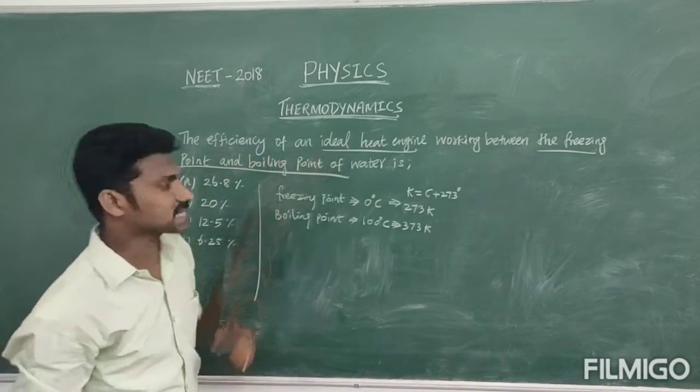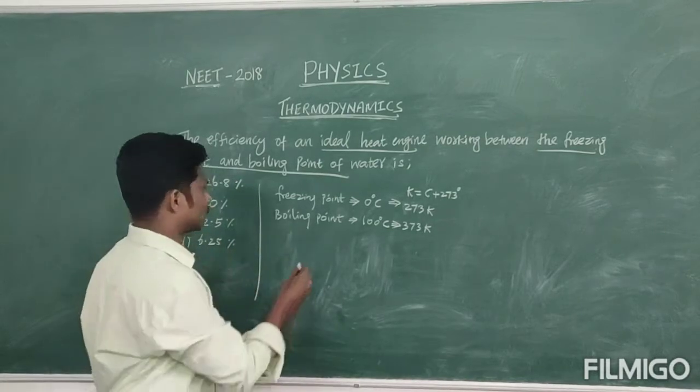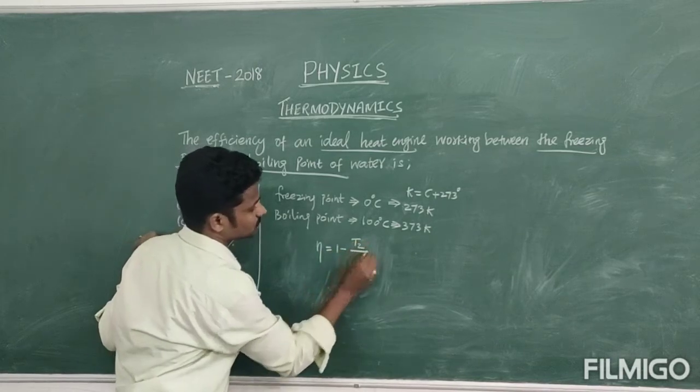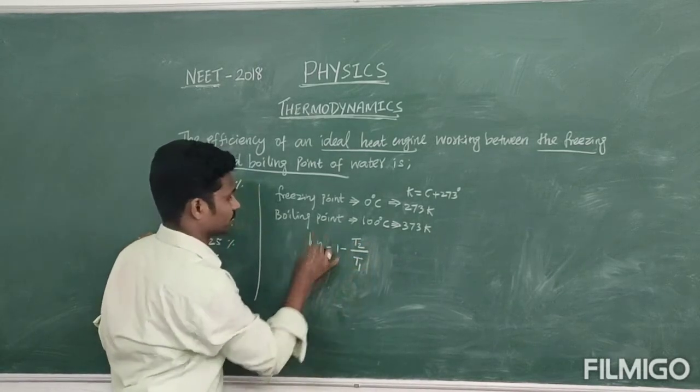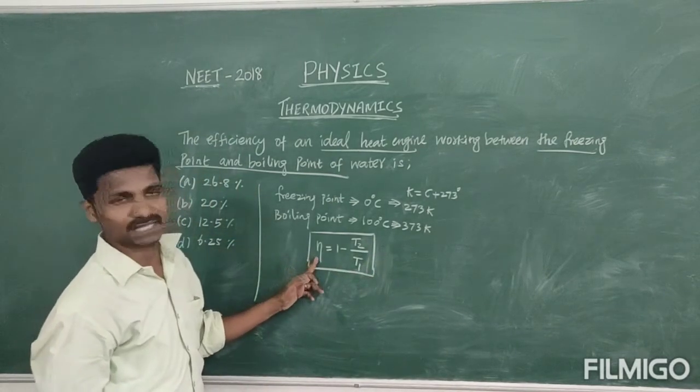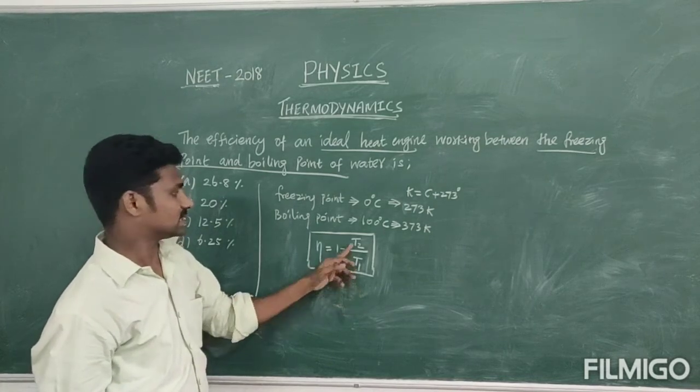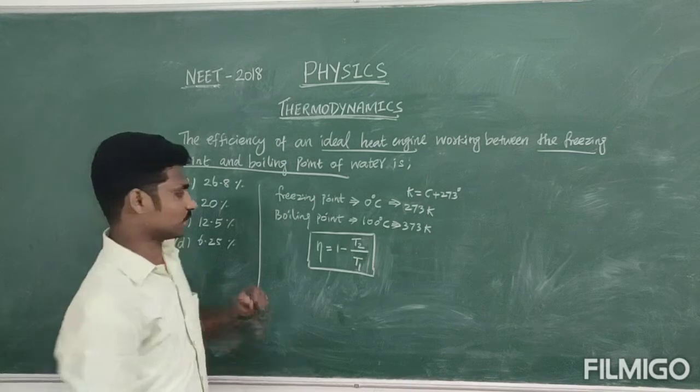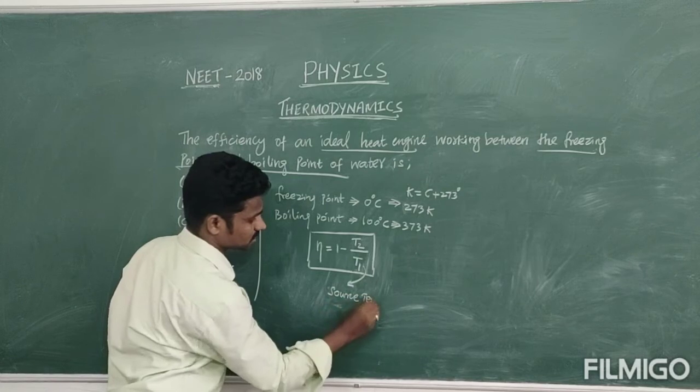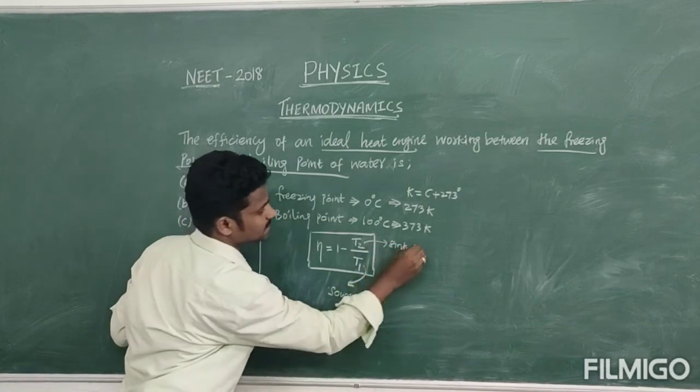But we know that this topic is related with the heat engine. So, the heat engine efficiency, you know the formula, that is eta is equal to 1 minus T2 divided by T1. In this formula, eta is nothing but efficiency of the heat engine, when T1 is nothing but source temperature, T2 is nothing but sink temperature. So, T1 is the source temperature, then T2 is sink temperature.